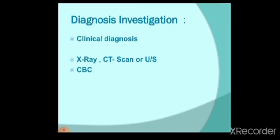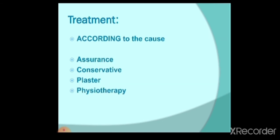To diagnose birth injuries, take a thorough clinical history and examine the baby for fractures, swelling, abnormal movements, or inability to move limbs. X-ray can exclude fractures, and CT scan or ultrasound can identify internal organ injury. Treatment varies: for Erb's palsy, many cases resolve with reassurance and conservative management. If not, physiotherapy is offered. For fractures, plaster casting is used.